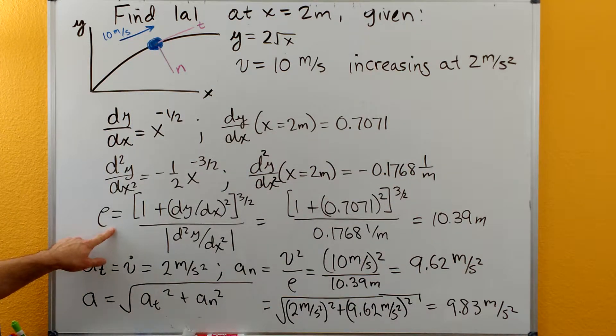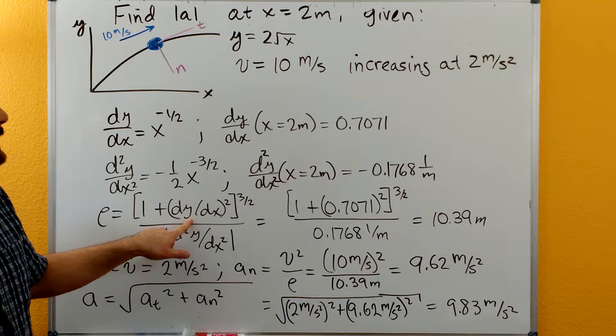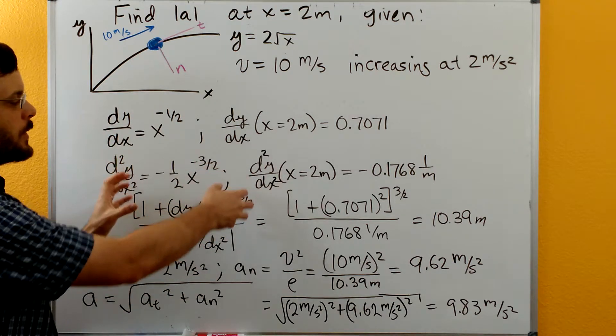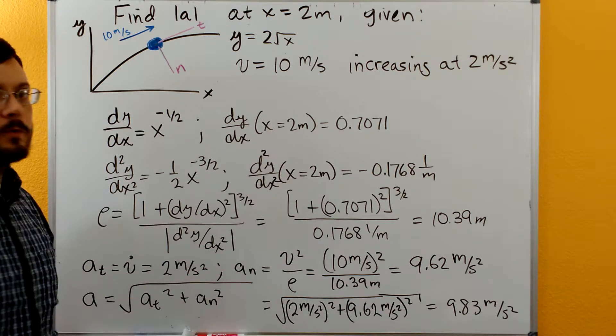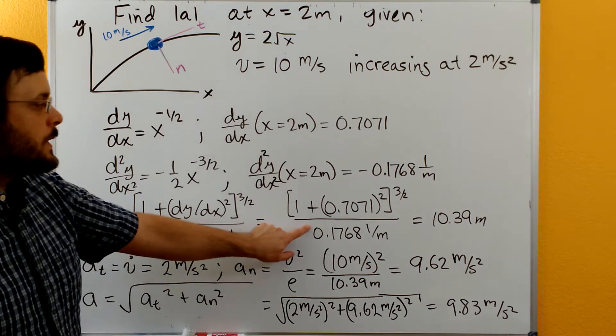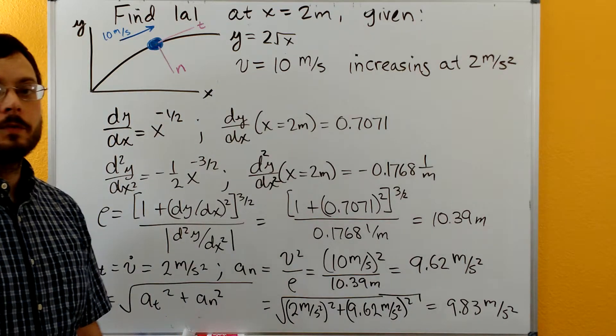And then we'll plug this into the radius of curvature function. So the radius of curvature is one plus the first derivative squared, this whole top part raised to the three-halves power, divided by the absolute value of the second derivative. So plugging in the numbers here gives us a radius of curvature of 10.39.